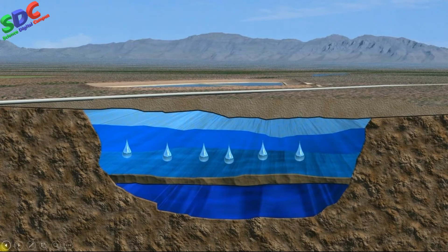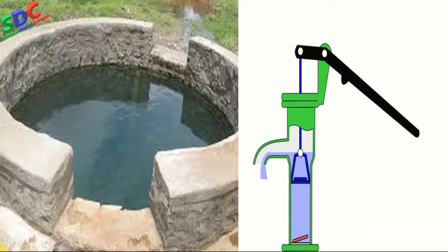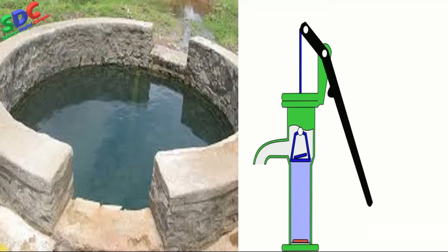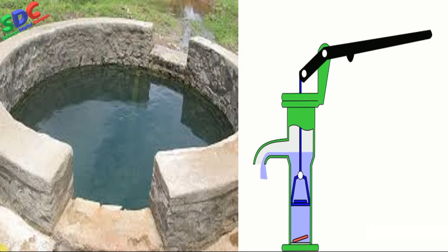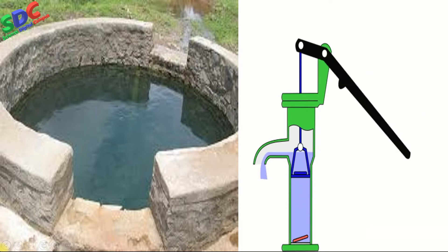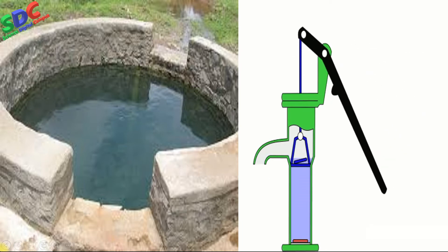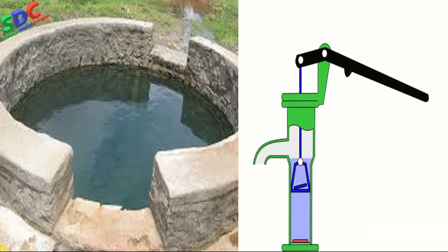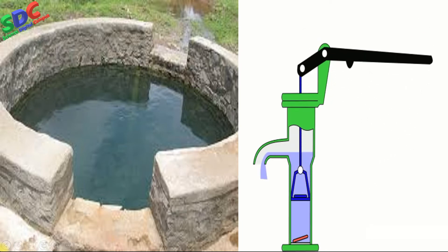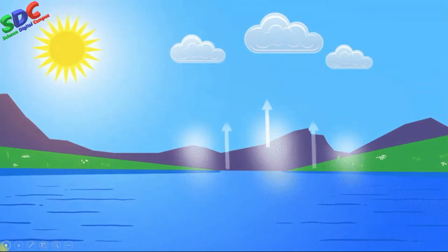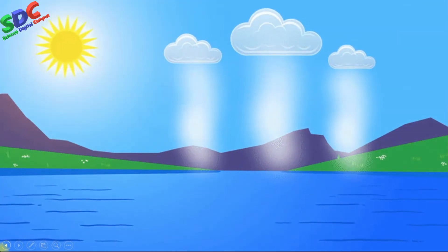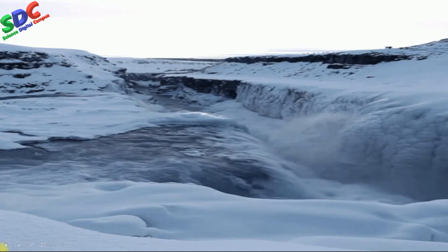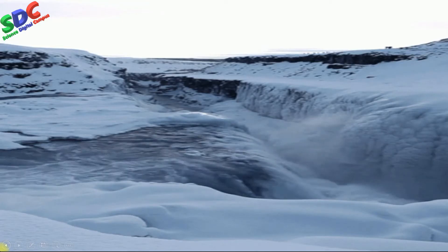Our elders used to dig water from wells and tube wells, and used hand pumps to draw this underground water. So far we have seen various water bodies on our Earth, but remember that these water bodies carry many impurities — their water is not pure.